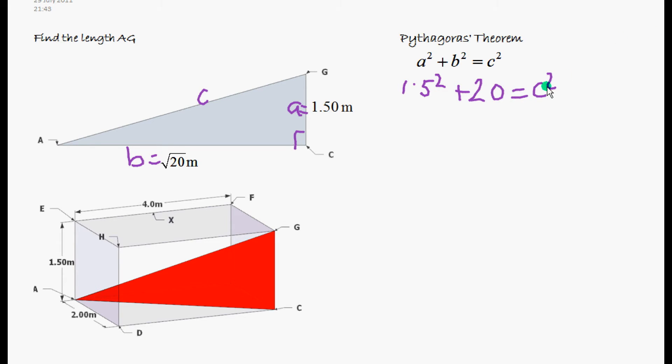So let's calculate that. 1.5 squared is 2.25. That equals C squared. And 2.25 plus 20 equals 22.25.